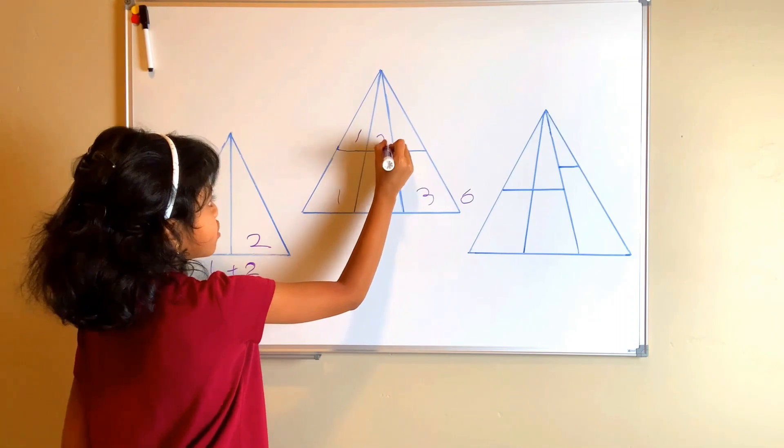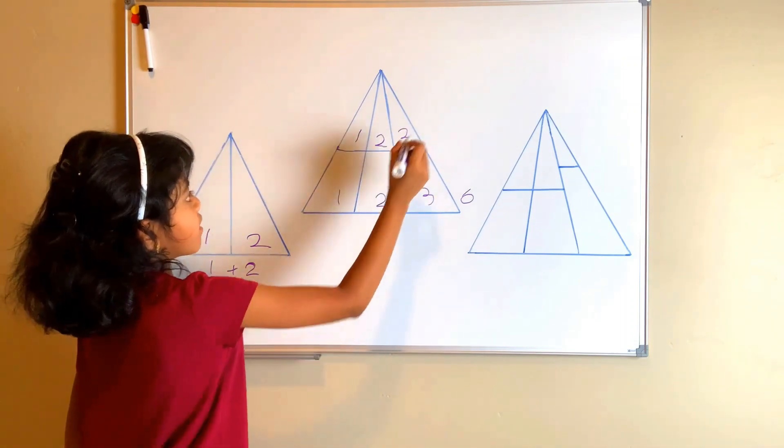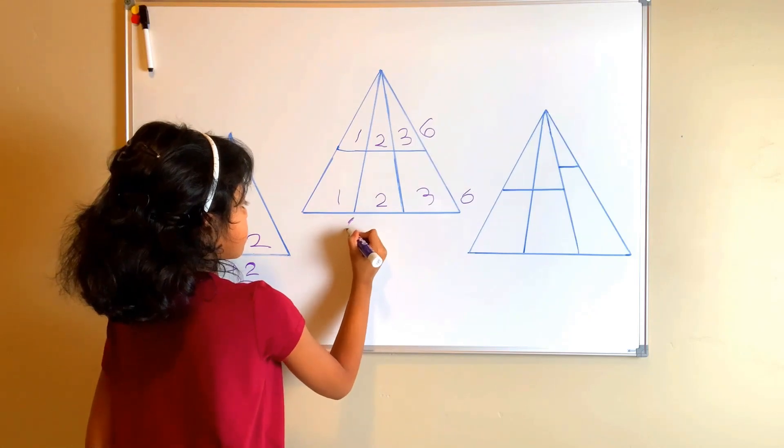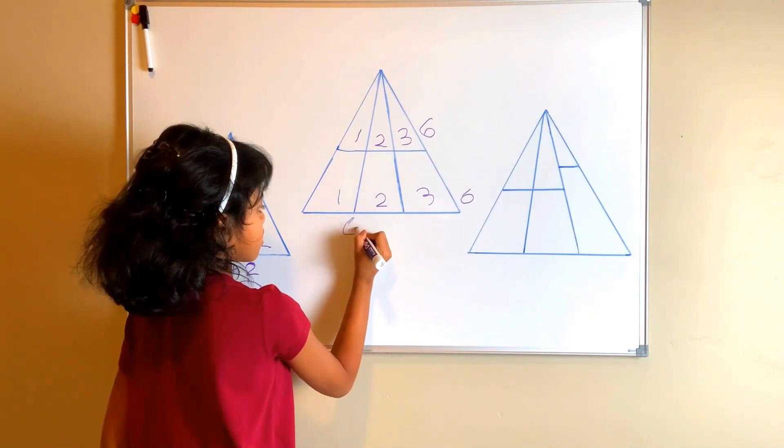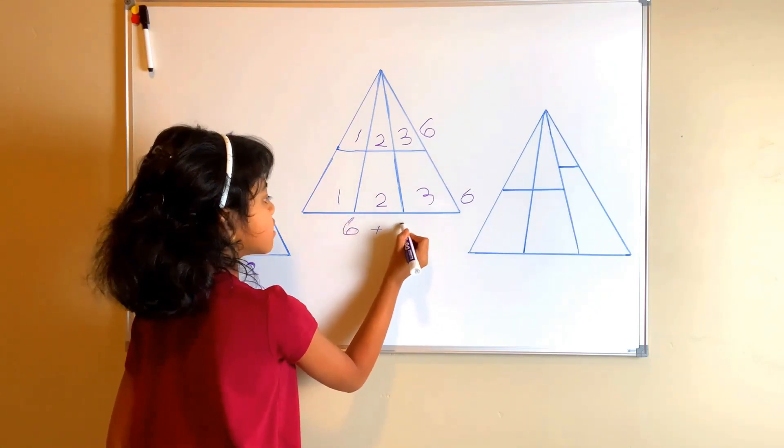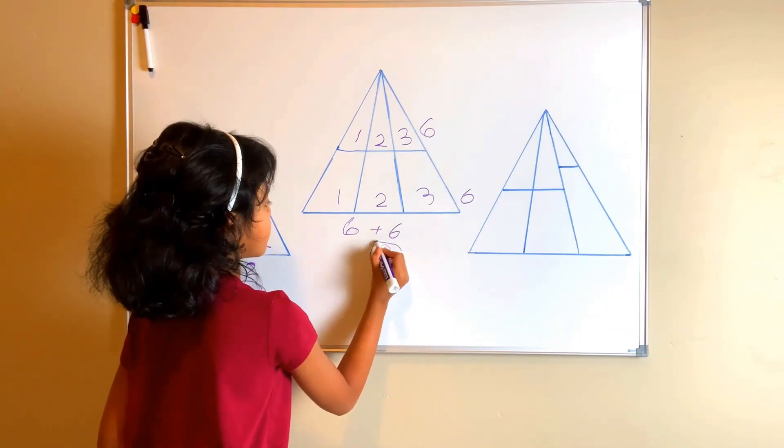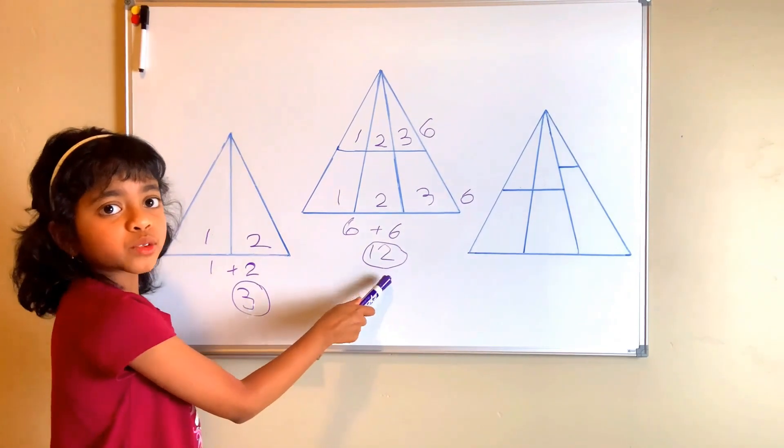One, two, three. That equals six. So six plus six equals twelve. So there are twelve triangles.